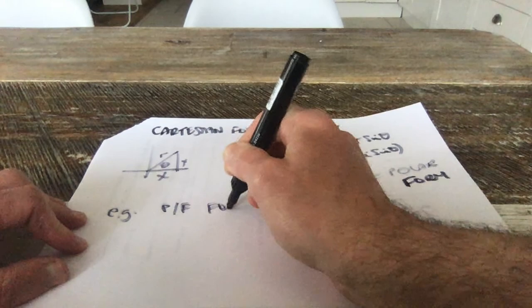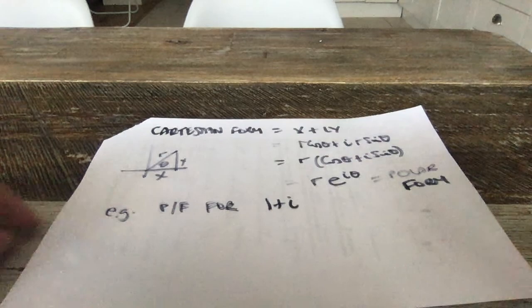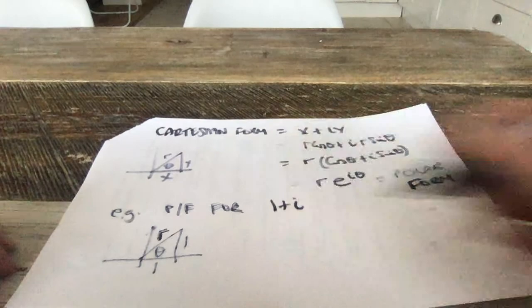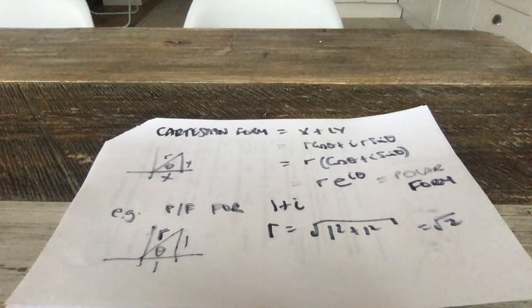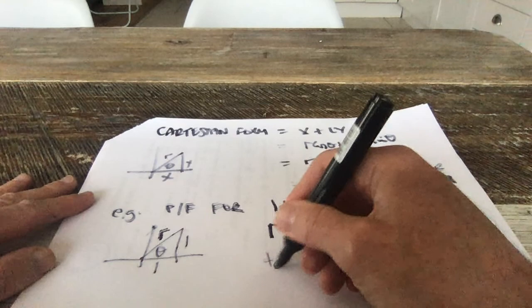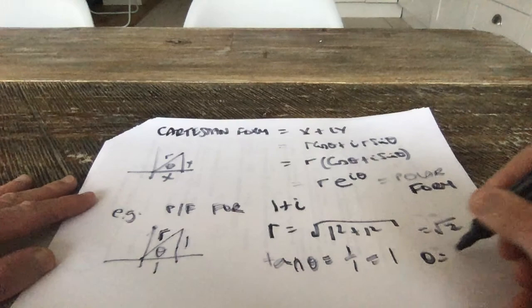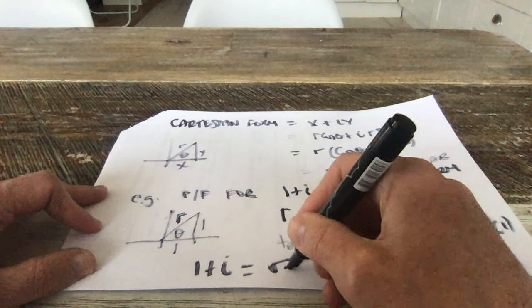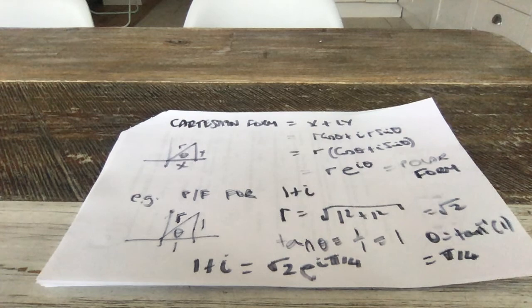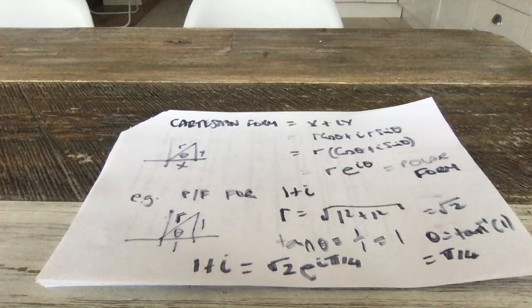Let's look at the polar form of 1 plus i. Draw your Argand diagram — this is 1 on the real axis, 1 on the imaginary axis, angle θ, and modulus r. R is always the square root of real part squared plus imaginary part squared — so it's √(1² + 1²) = √2, using Pythagoras. Theta is found from tan θ = 1/1, so θ = tan⁻¹(1) = π/4. Therefore 1 + i in polar form is √2 e^(iπ/4). These two forms do not look equivalent at all, but they are the same thing.